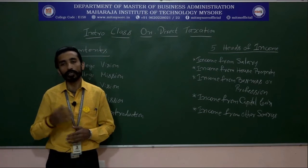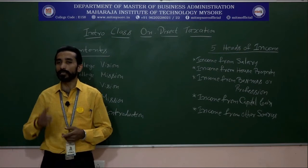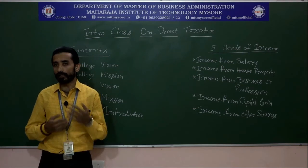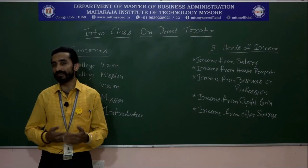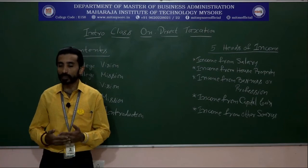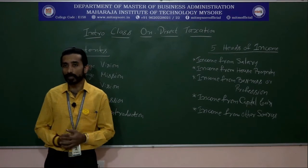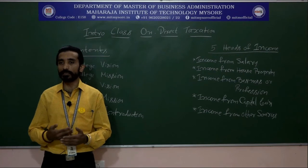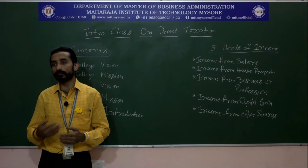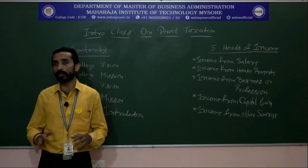Unit 4 covers two aspects: income from capital gains and income from other sources. Under capital gains, you will learn about the charges levied, how capital gain is calculated, transfer of capital assets, meaning of capital assets, and their inclusions and exclusions. Problems will be based on capital gains, while the theoretical concepts of income from other sources are also discussed in this unit.